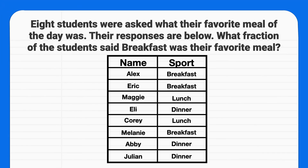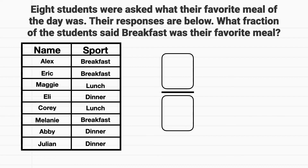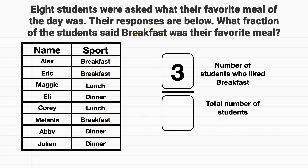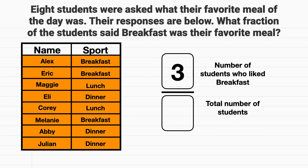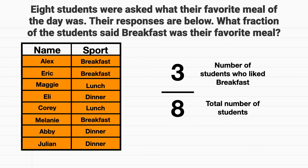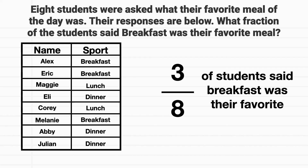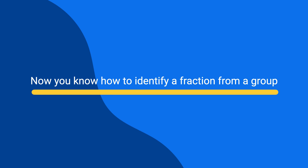Here's your last problem for this video. 8 students were asked what their favorite meal of the day was. These were their responses. What fraction of the students said breakfast was their favorite meal? The numerator will be how many students said breakfast was their favorite. We can see that 1, 2, 3 students said breakfast was their favorite meal. The denominator is the total number of students. We can see a total of 8 students were asked. Therefore, 3 eighths of the students said breakfast was their favorite meal. Today you learned how to identify a fraction from a group.